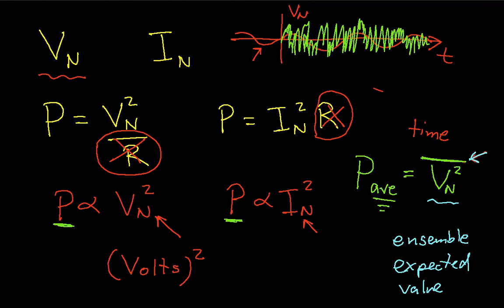In either case, we can talk about this term, either averaged over time or over the ensemble as appropriate, as a mean squared value. Again, mean is essentially another term for averaging. And we've taken the voltage and squared it, so it's a mean squared value.